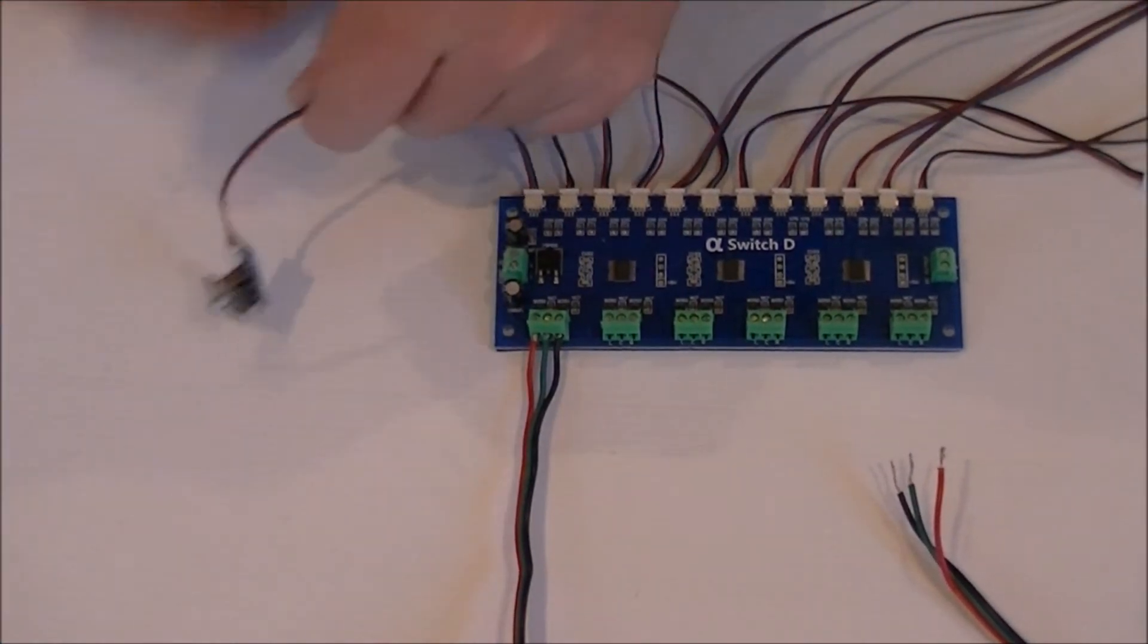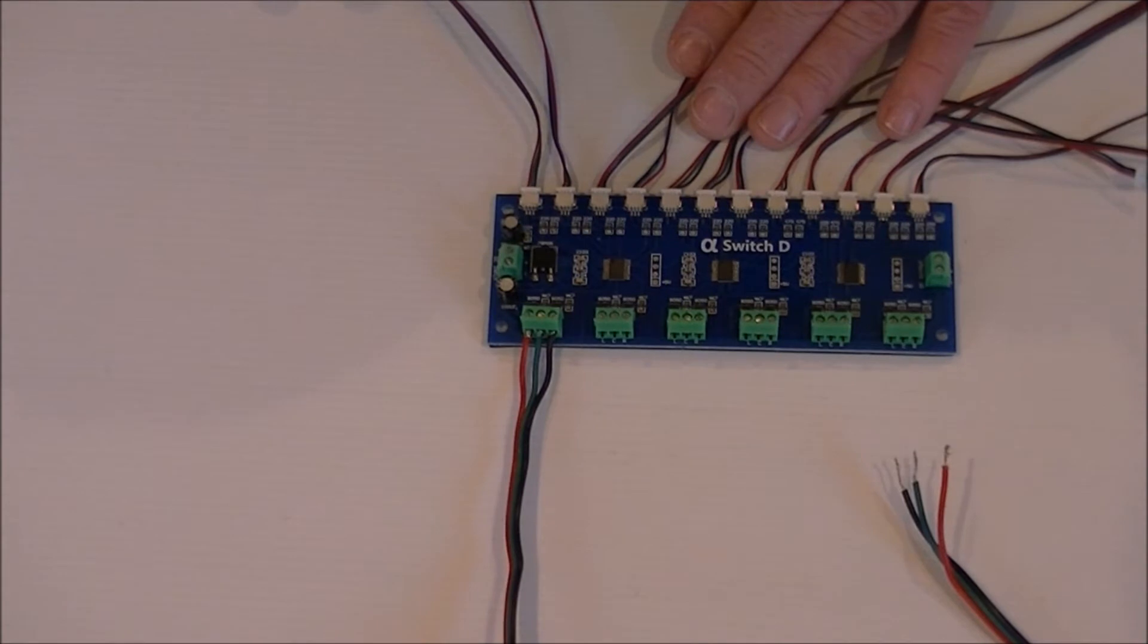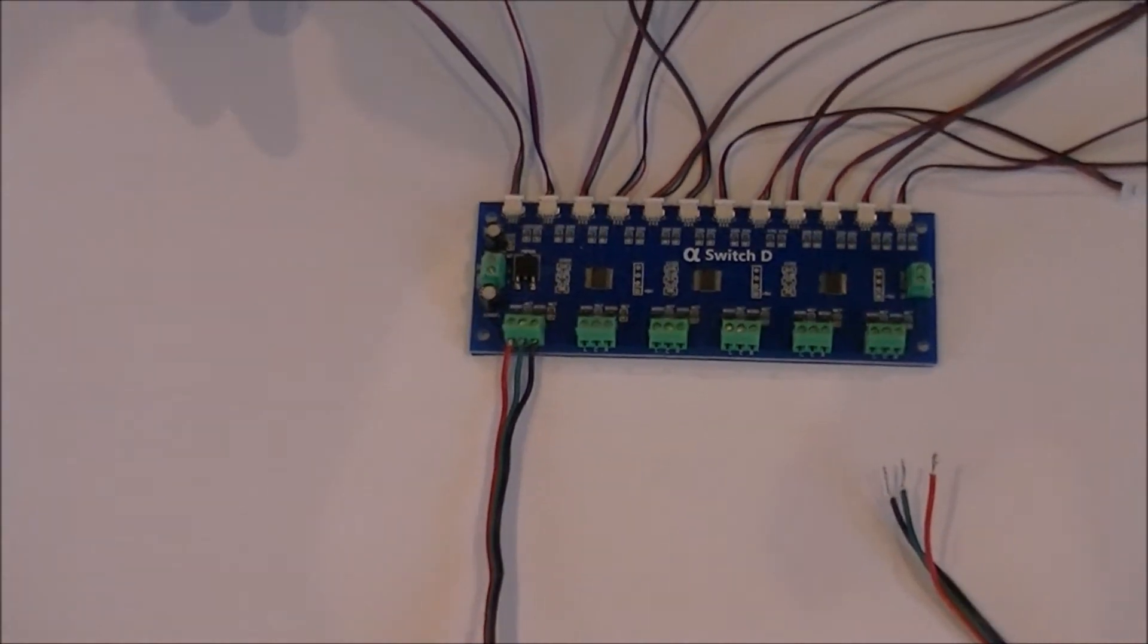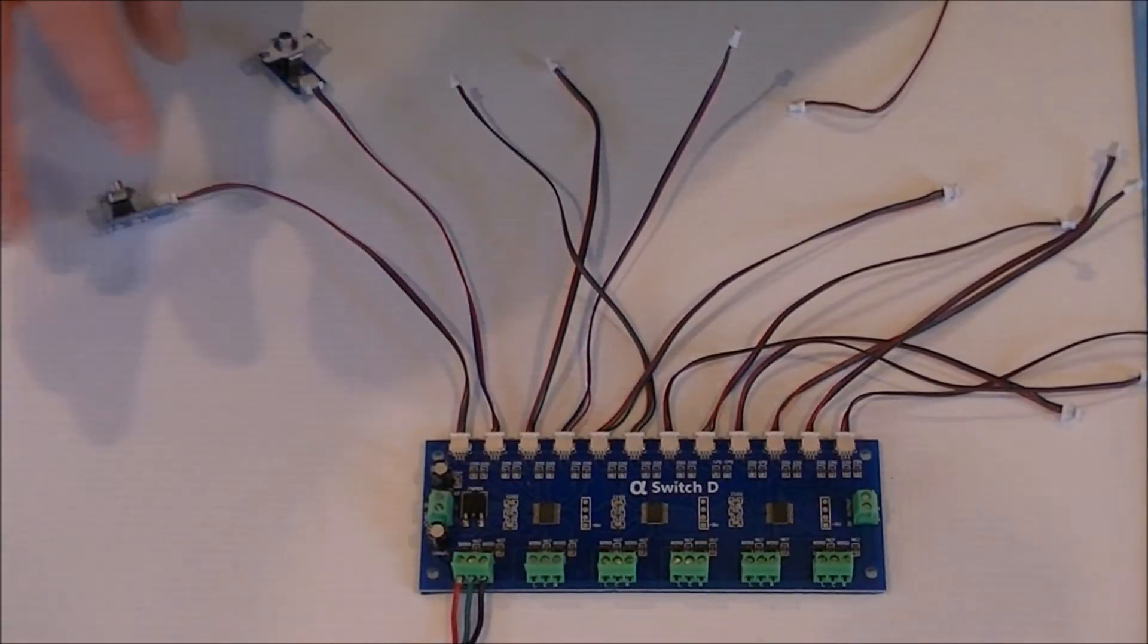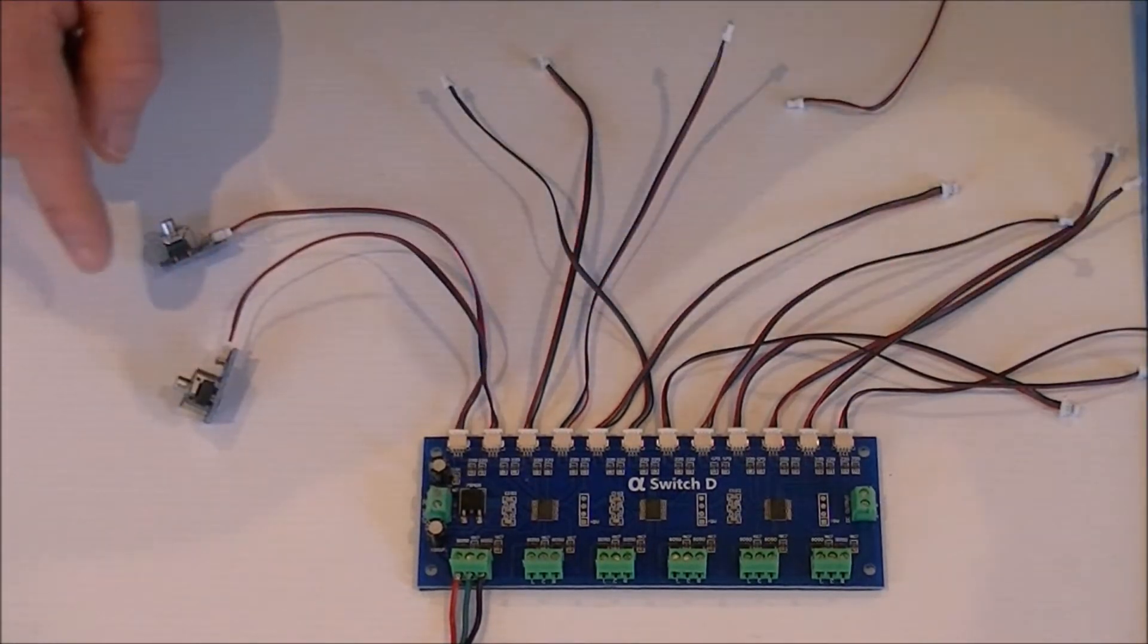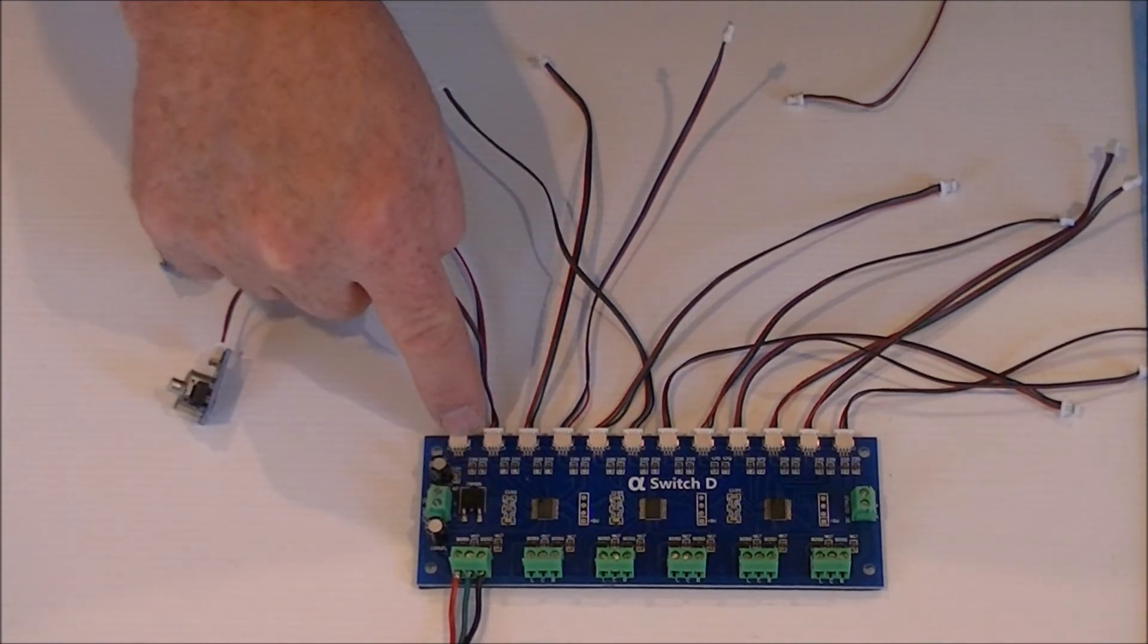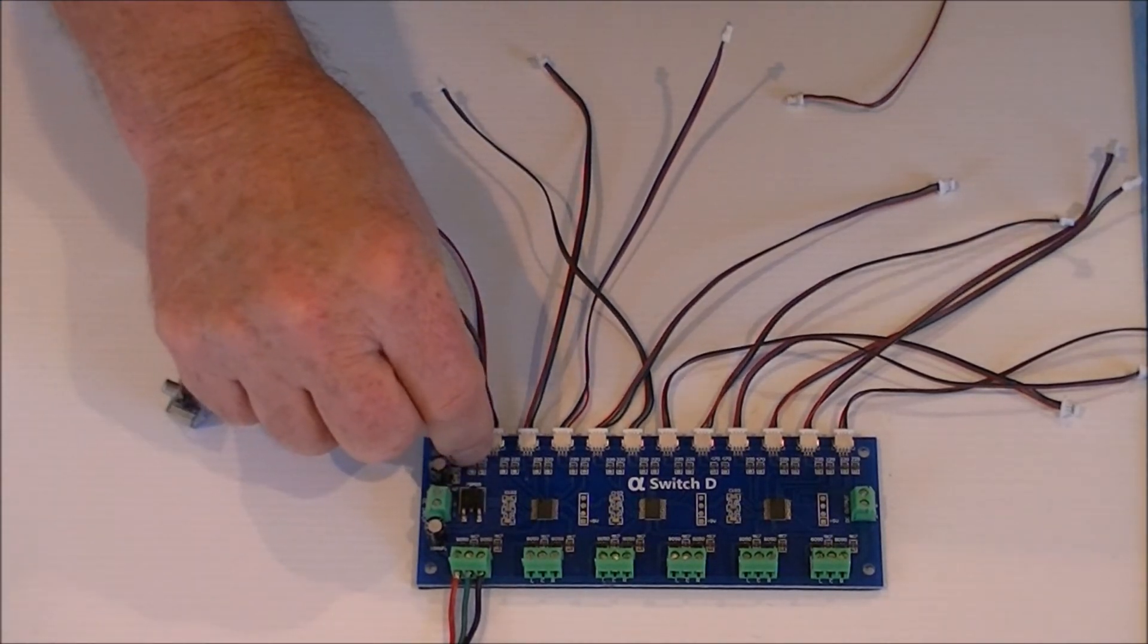So this is how you wire up your cobalt alpha switch panel. These are your push button switches. That's just a plug and play, so that pushes in. Two switches per motor. So remember, two switches per motor.